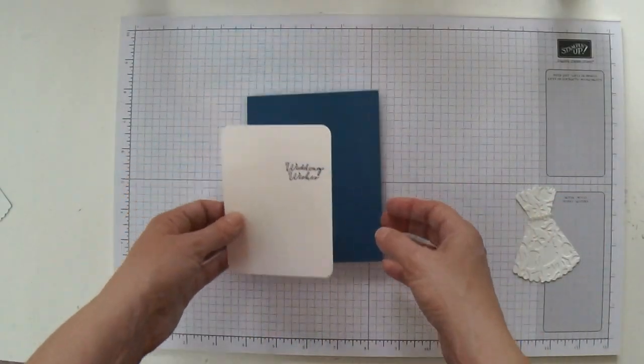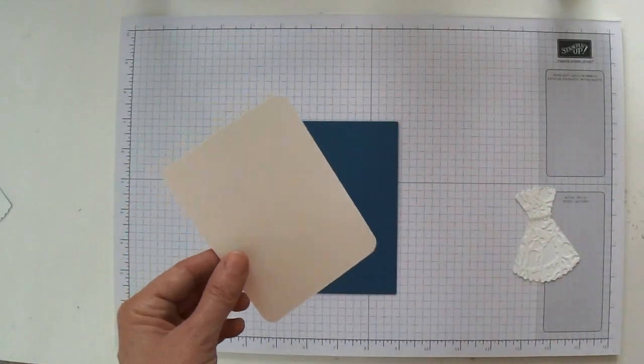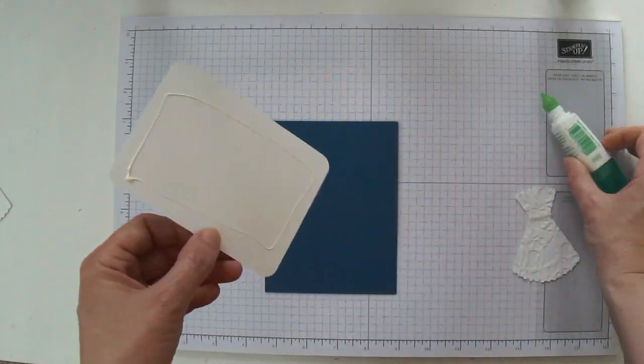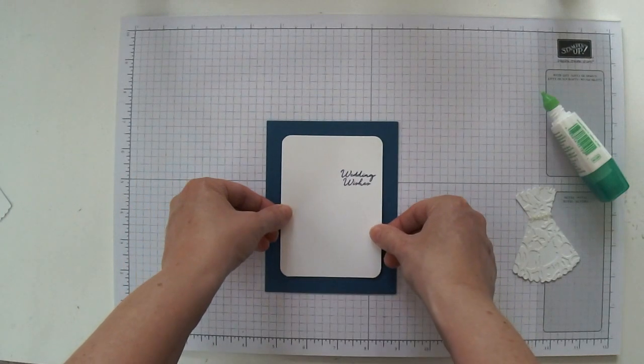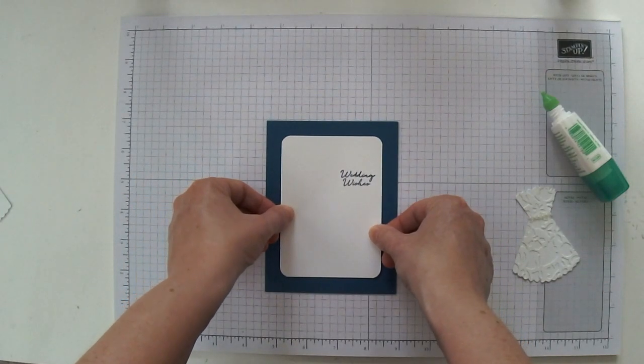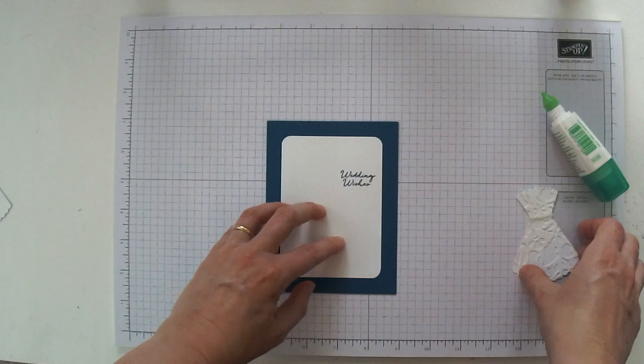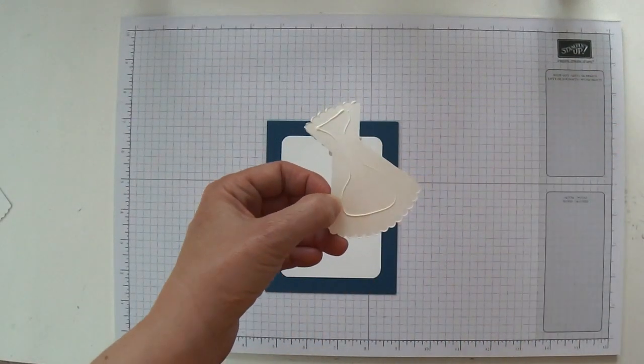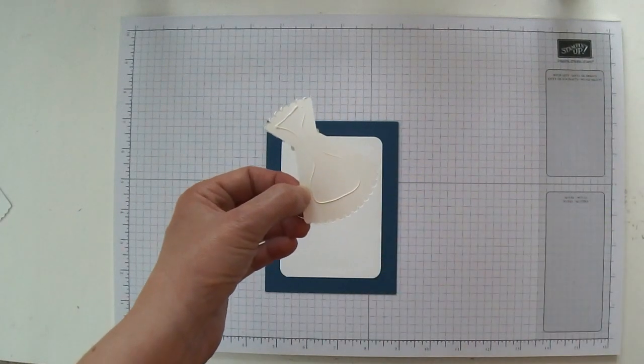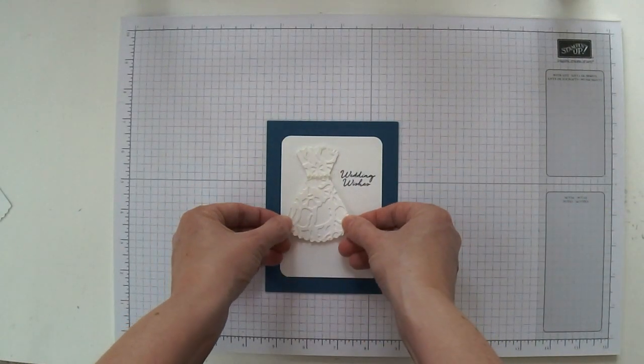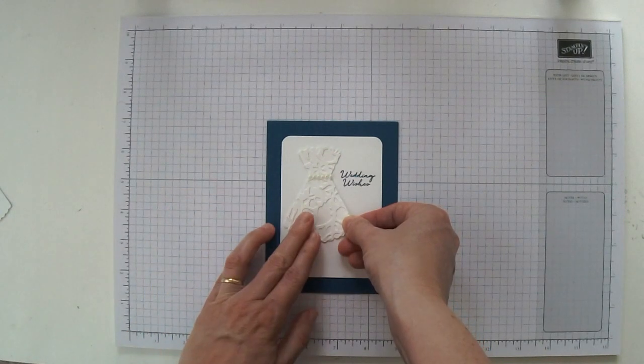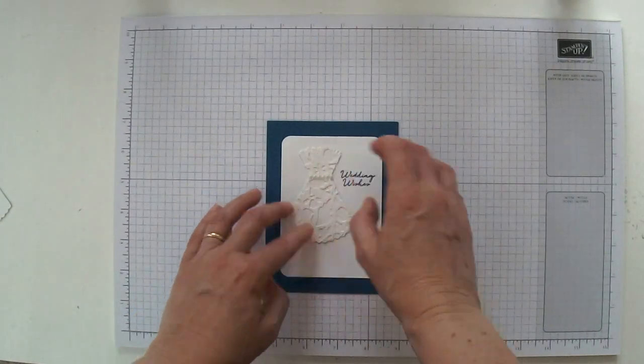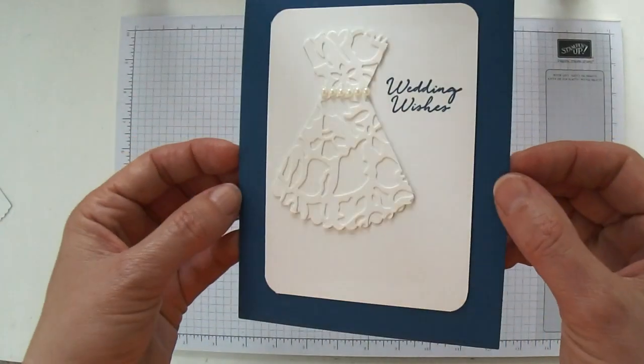Now all we need to do is assemble our card. So I'm going to take a little bit of Tombow and put it on the back of this Whisper White piece and I'm just going to center it on my card. I'm going to add some Tombow to the back of my wedding dress and then add that right beside my little greeting of wedding wishes. It's already looking really cute. Look at that dress. Isn't that pretty?